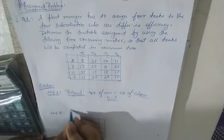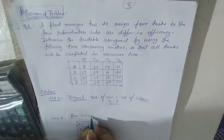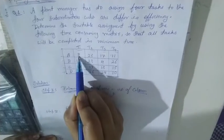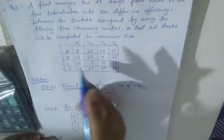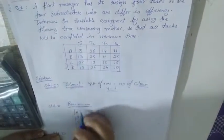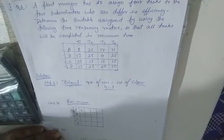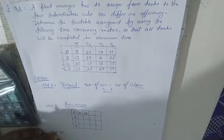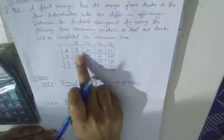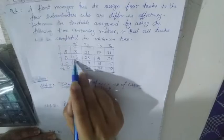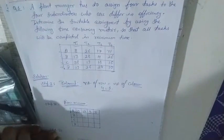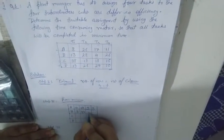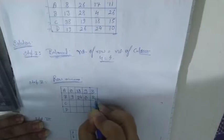The second step is row minimum. We go row-wise and subtract the minimum element from each element in that row. The first row minimum element is 8, so: 8 minus 8 is 0, 26 minus 8 is 18, 17 minus 8 is 9, and 11 minus 8 is 3. The second row minimum element is 4: 13 minus 4 is 9, 28 minus 4 is 24, 4 minus 4 is 0, and 26 minus 4 is 22.